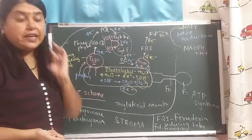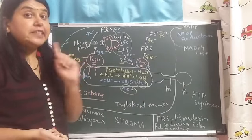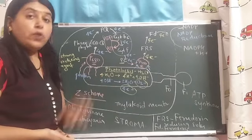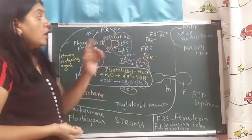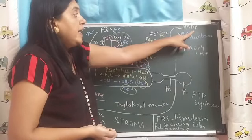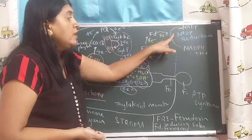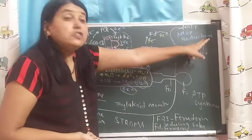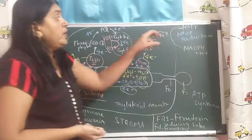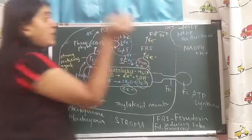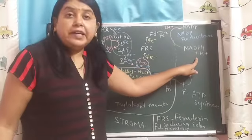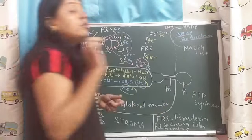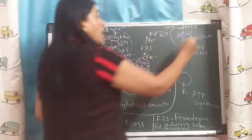The features of non-cyclic photophosphorylation: both PS1 and PS2 are taking part; there is splitting up of water; there is release of oxygen; there is formation of NADPH because NADP is reduced by electrons and protons from the stroma region. The reaction is catalyzed by the enzyme NADP reductase, which is located on the stroma side.